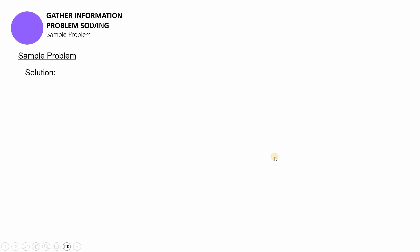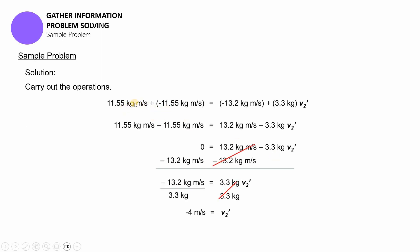After substituting the givens, we carry out the operation. First, you multiply the parentheses and then fix the signs. This is negative and that's an addition, so you apply the laws of integers and get a negative result. Over here, you multiplied them — the parentheses went first. However, you cannot do actual multiplication since V2 prime does not have an absolute value, so you just put them together. On the other side, it will be zero because they have the same absolute value. Whereas on the other side, it's still 13.2 kilogram meters per second minus 3.3 kilograms times V2 prime.